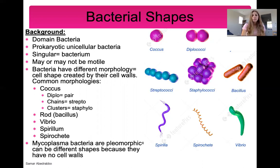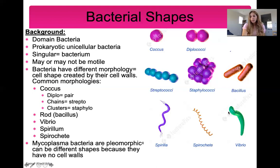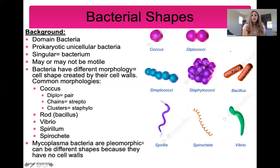Other shapes include vibrio, spirillum, and spirochete — all spiral forms. Vibrio are just slightly curved bacteria, spirochetes are very tightly spiral, and spirilla are a little looser. Mainly, know that coccus is round and bacillus or rods are rod-shaped.